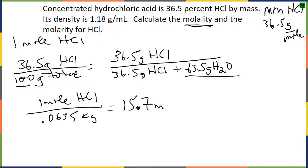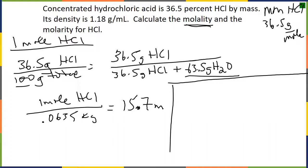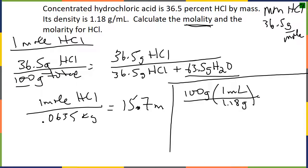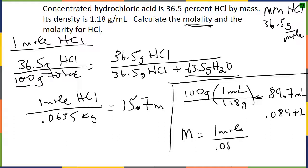For molarity — moles per liter of total solution — we still have 1 mole of HCl, but we need liters of total solution. Using the density (1.18 g/mL), 100 g of solution gives 84.7 mL = 0.0847 L. Molarity = 1 mol ÷ 0.0847 L = 11.8 M. Wait — working through: 1 ÷ 0.0847 = approximately 11.8 M. The instructor arrives at a similar value for this 36.5% HCl solution.